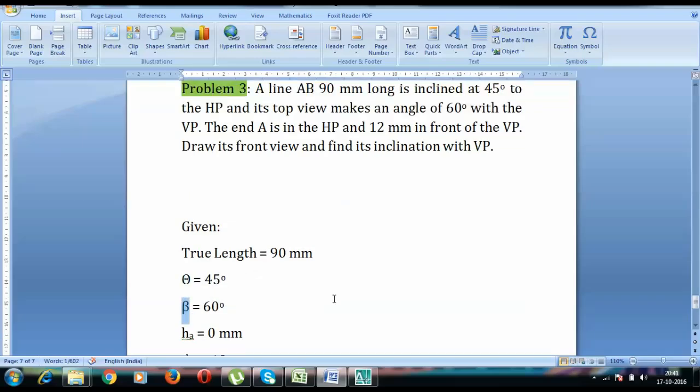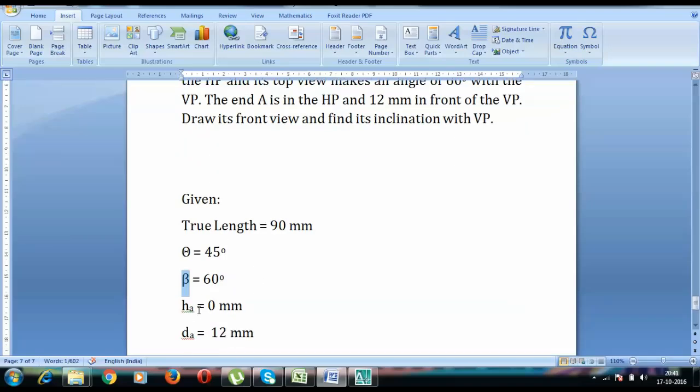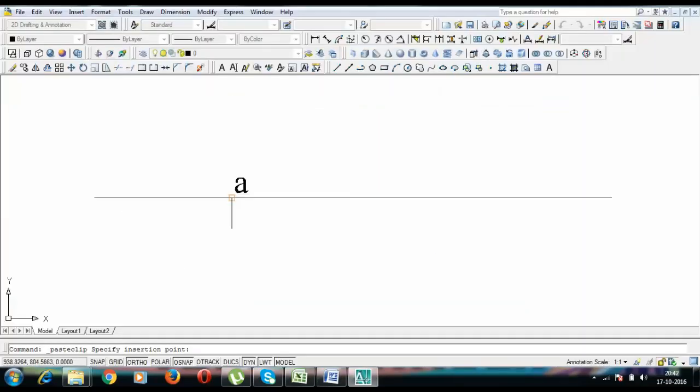Since this is the final top view of the line, it makes a certain angle that is 60 degrees with the vertical plane. The end is in the HP, that's why hₐ is equal to 0, and it is 12mm in front of VP, that is dₐ is going to be 12 millimeters.